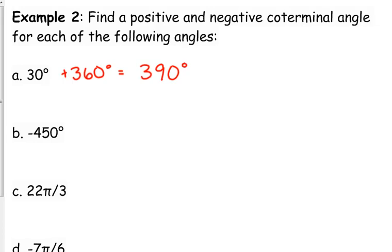We could also add 360 again, and we could get another one, but this is the closest one. So, negative, we're going to subtract 330 from the original 30, so that would give us negative 300. We could do it again, and that would be another one.